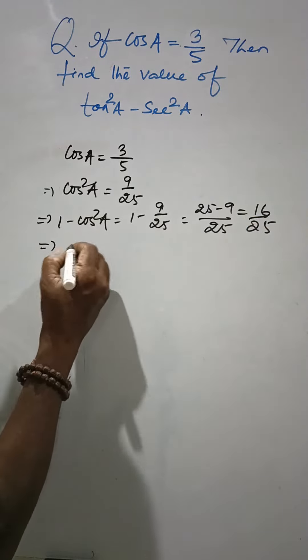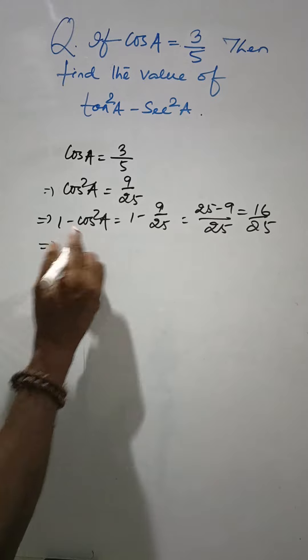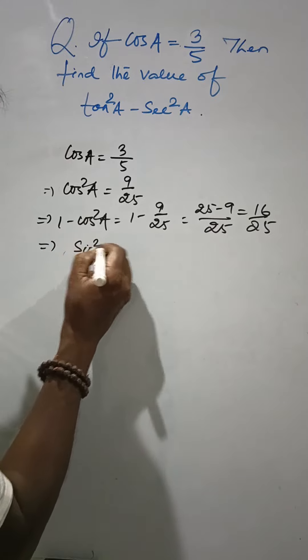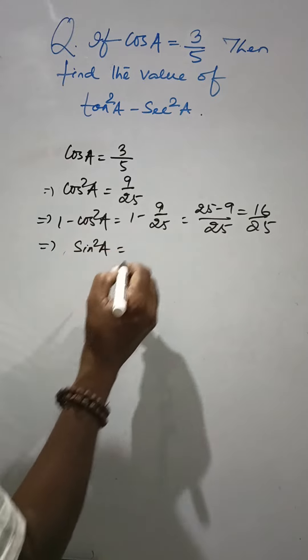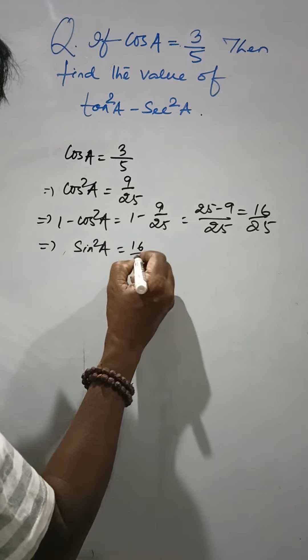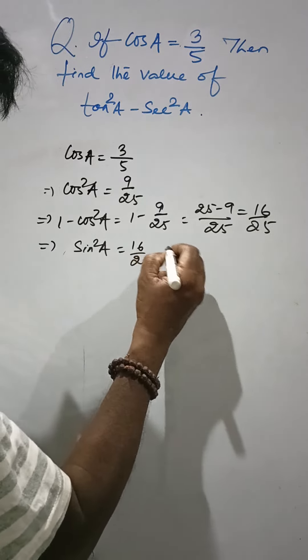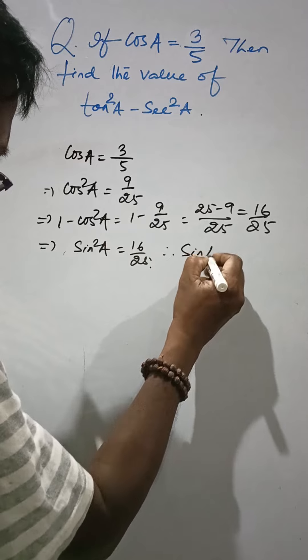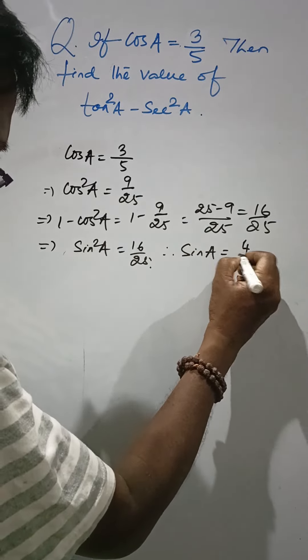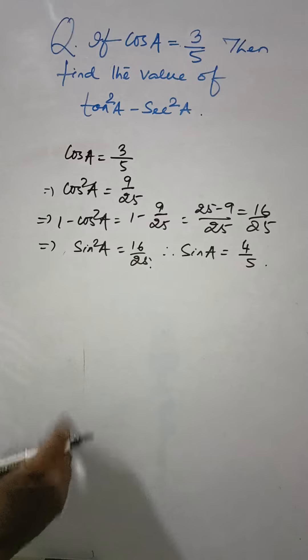Now this is 1 minus cos square A, which is sin square A. Here, sin square A is equal to 16 by 25, then sin A is equal to 4 by 5.